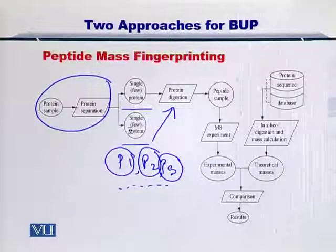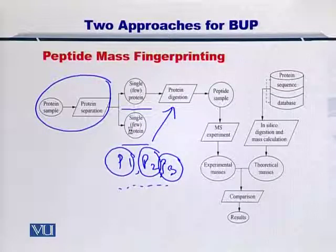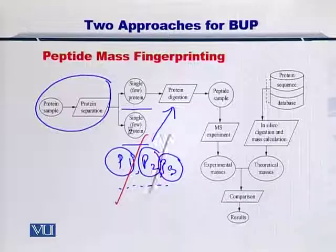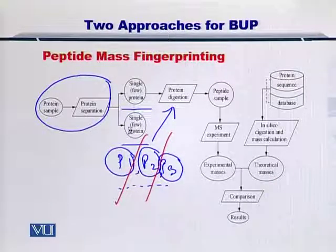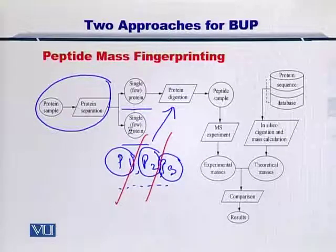In peptide mass fingerprinting, the most important thing to remember is that the proteins need to be separated first from the protein mixture, and then a single protein can be selected for onward digestion by an enzyme. Once you digest it, you can insert the peptides into the mass spectrometer, measure their mass, and compare them with peptides from the sequence database.